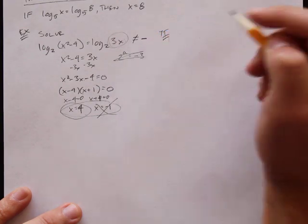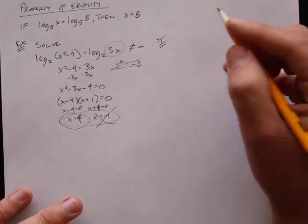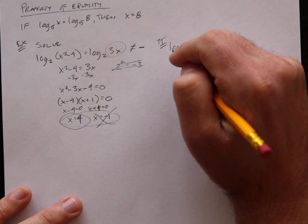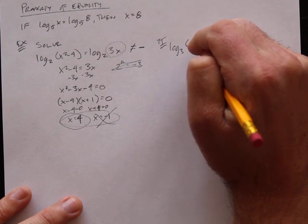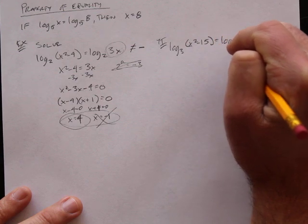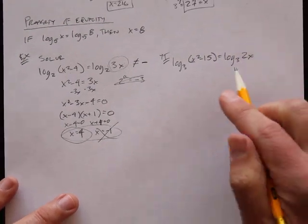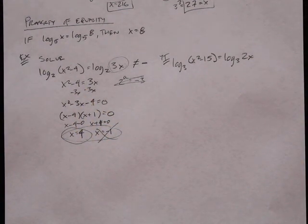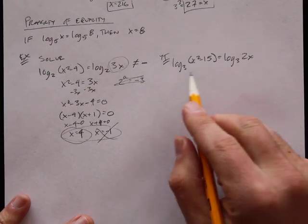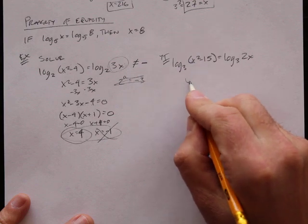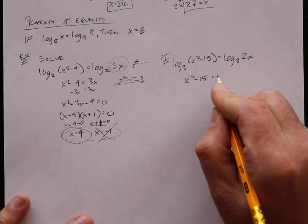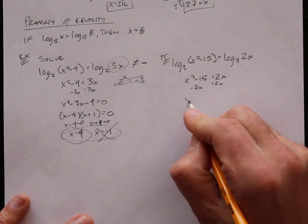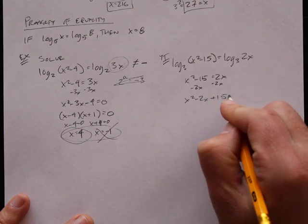You try one — make sure you check your answers to see if either of them will make a negative number in the argument. Log base 3 of x squared minus 15 equals log base 3 of 2x. These are both log base 3, so just ignore the log and write what's here. Subtract 2x from each side: x squared minus 2x minus 15 equals 0.